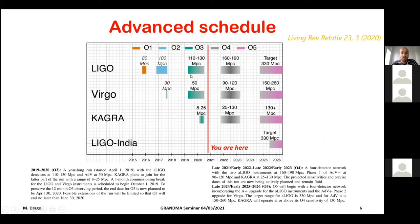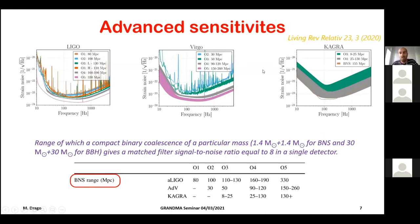We have completed three runs with the advanced detectors. Every time a new run starts, the goal is to achieve better sensitivity. This is typically expressed through the detector sensitivity curve. The most relevant sensitivity figure is what is called the binary neutron star range — the distance at which you can detect a binary neutron star merger with an SNR of 8 in a single detector, with a signal-to-noise ratio of 8. This gives a rough idea of how much sensitivity is improving over successive runs.